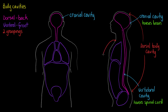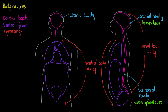The ventral cavities are on the front of the body and typically house and protect our organs. We have the superior mediastinum, which is one of the first subdivisions of our ventral body cavities — encompassing everything from front view and side view. The superior mediastinum is going to house and protect our trachea and esophagus, which travel through it.